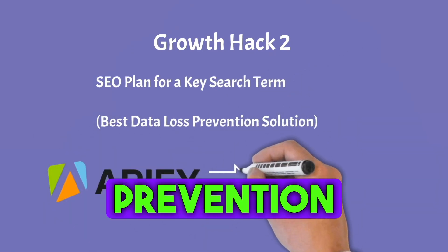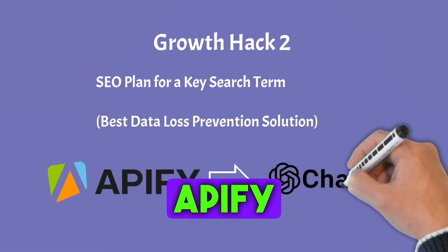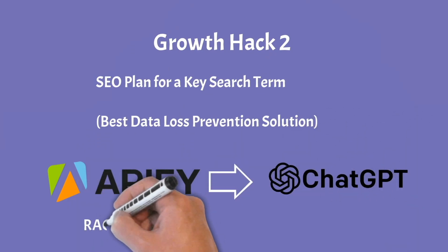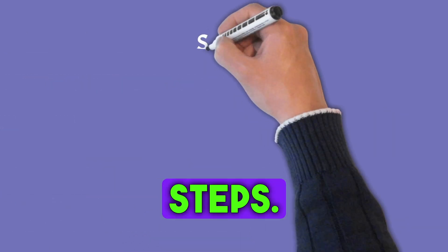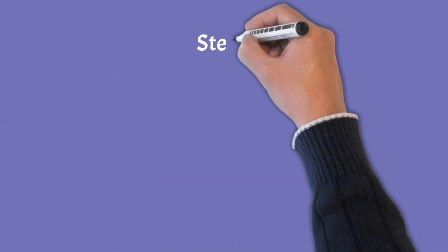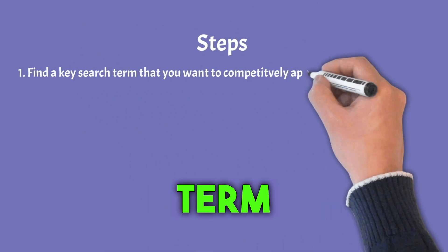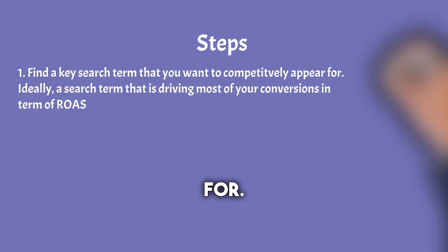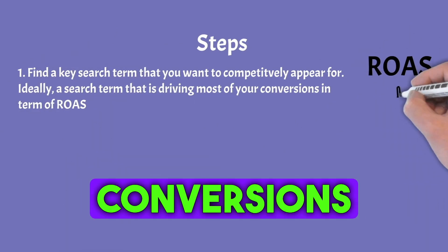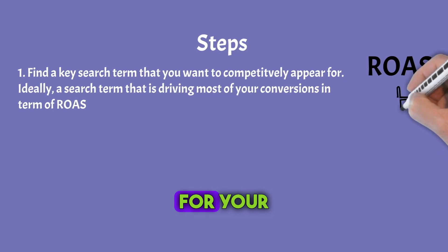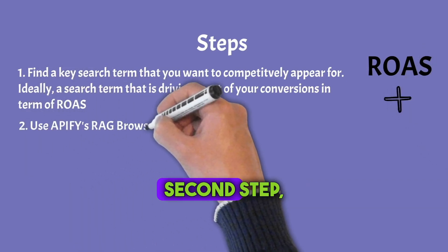I'll be using the RAG browser from Apify and ChatGPT. The first step: find the key search term that you want to competitively appear for — ideally a search term that is driving the most of your conversions in terms of ROAS for your paid search or paid display campaigns.